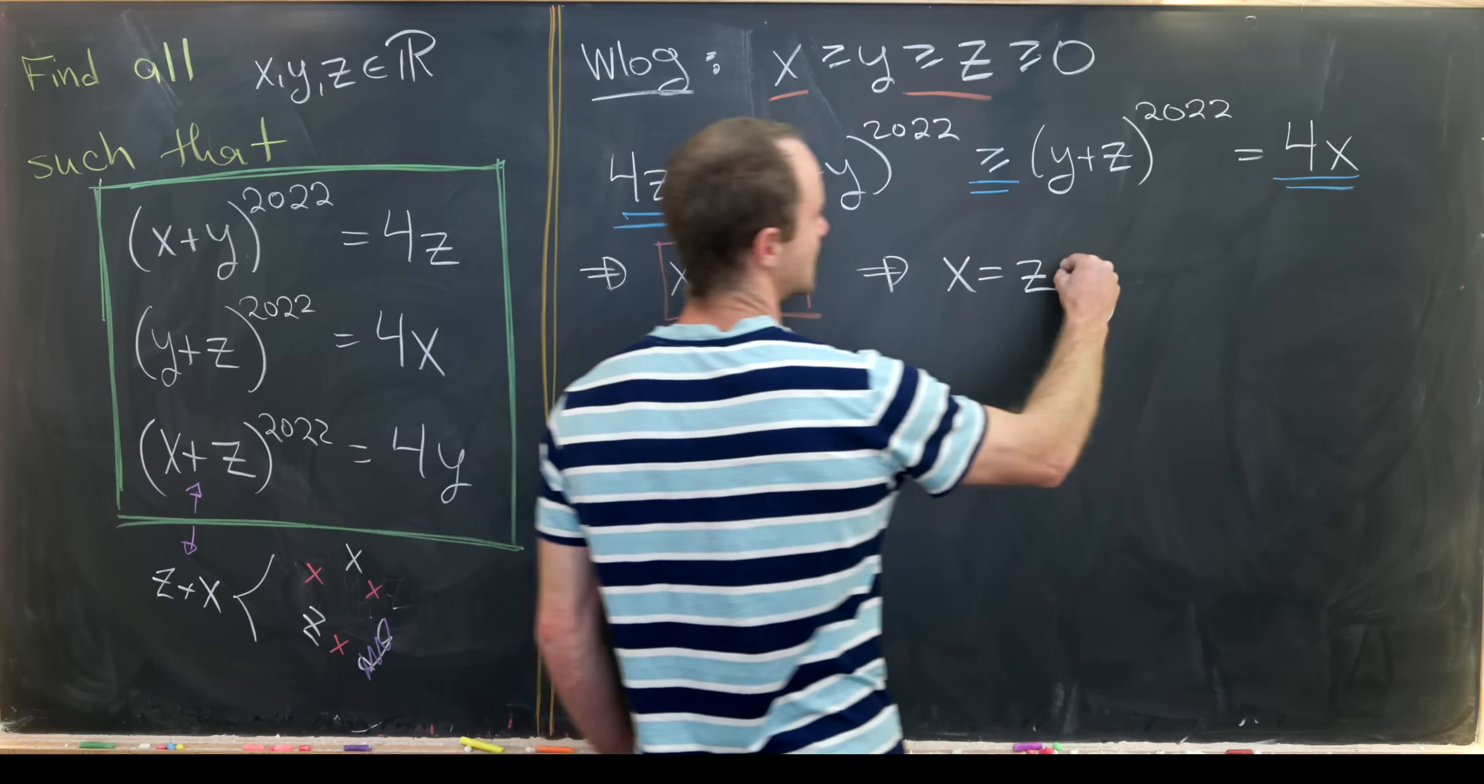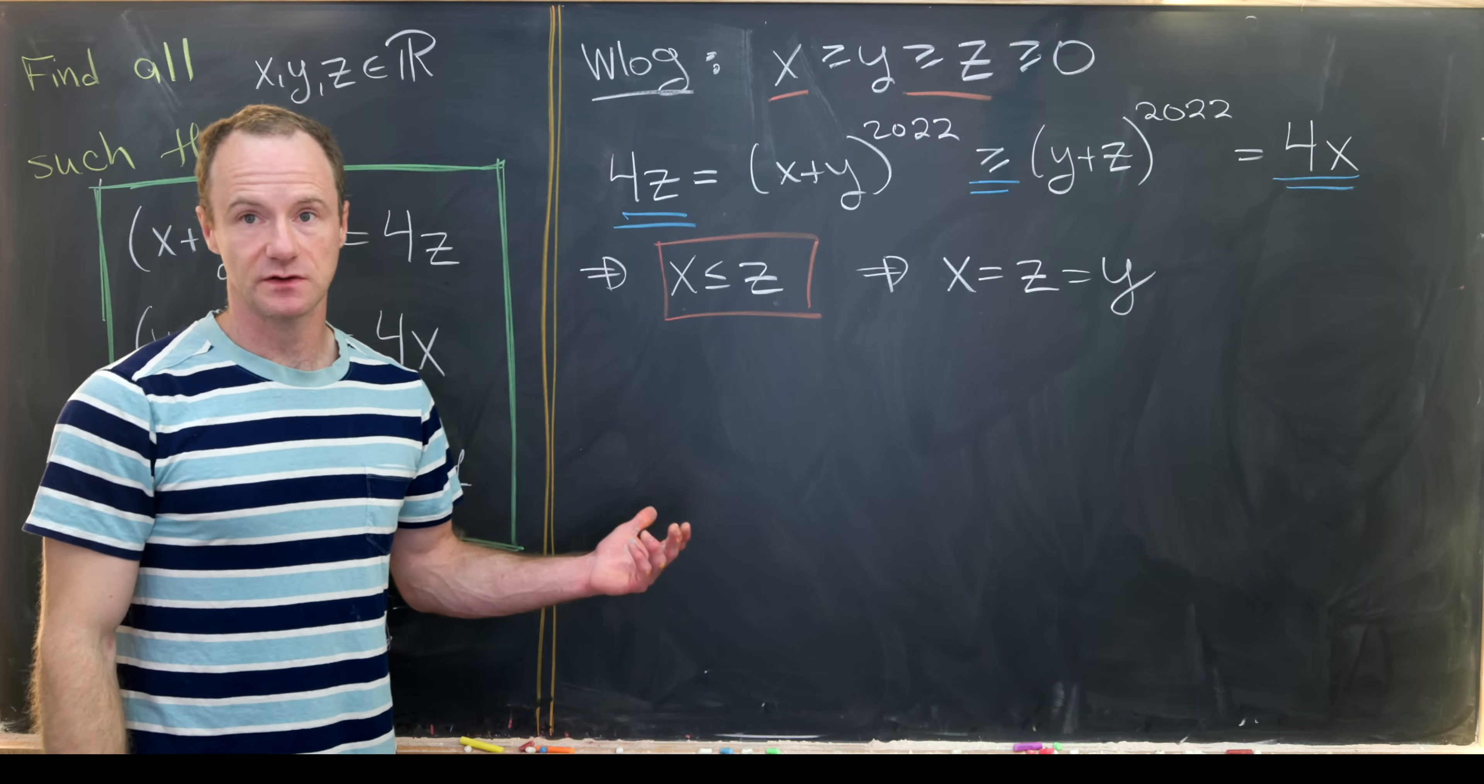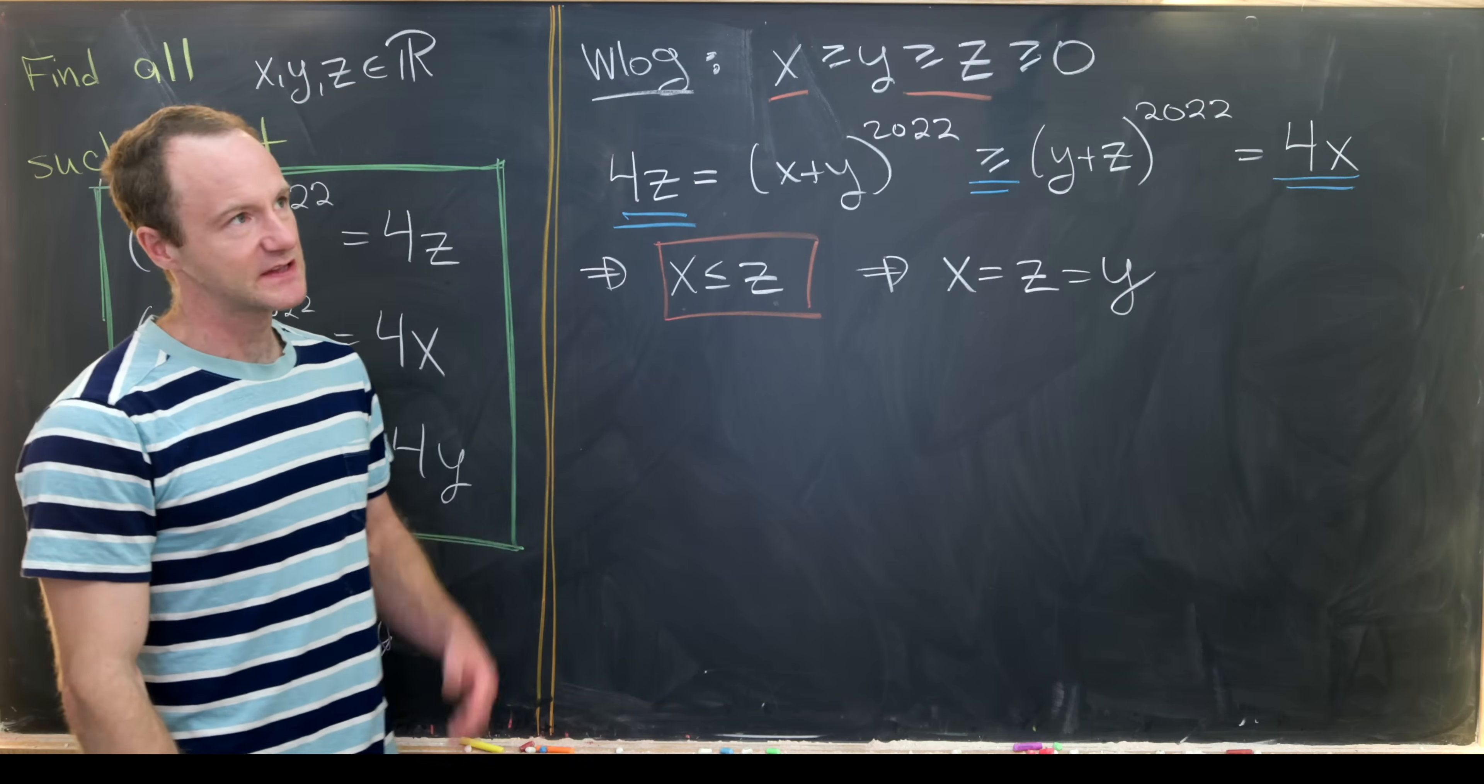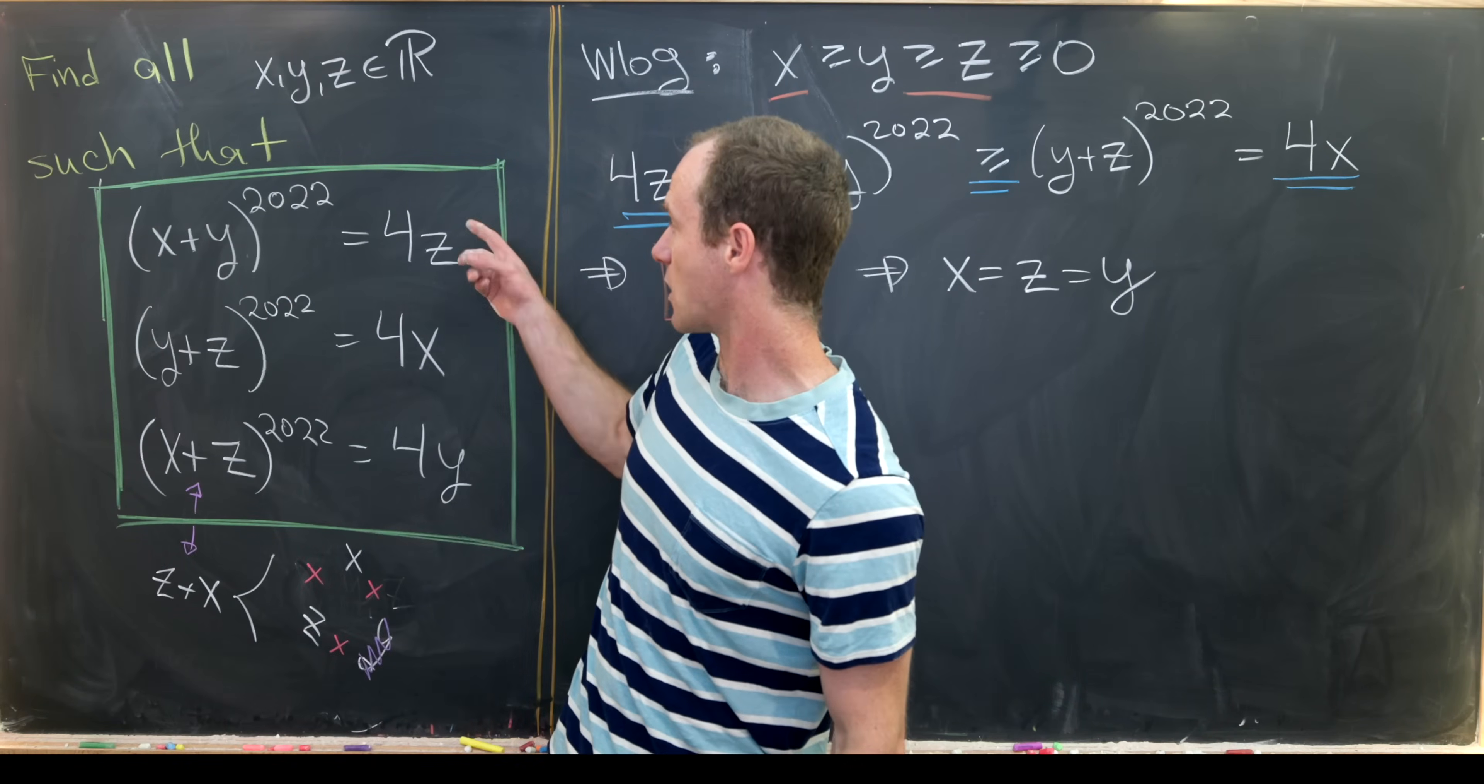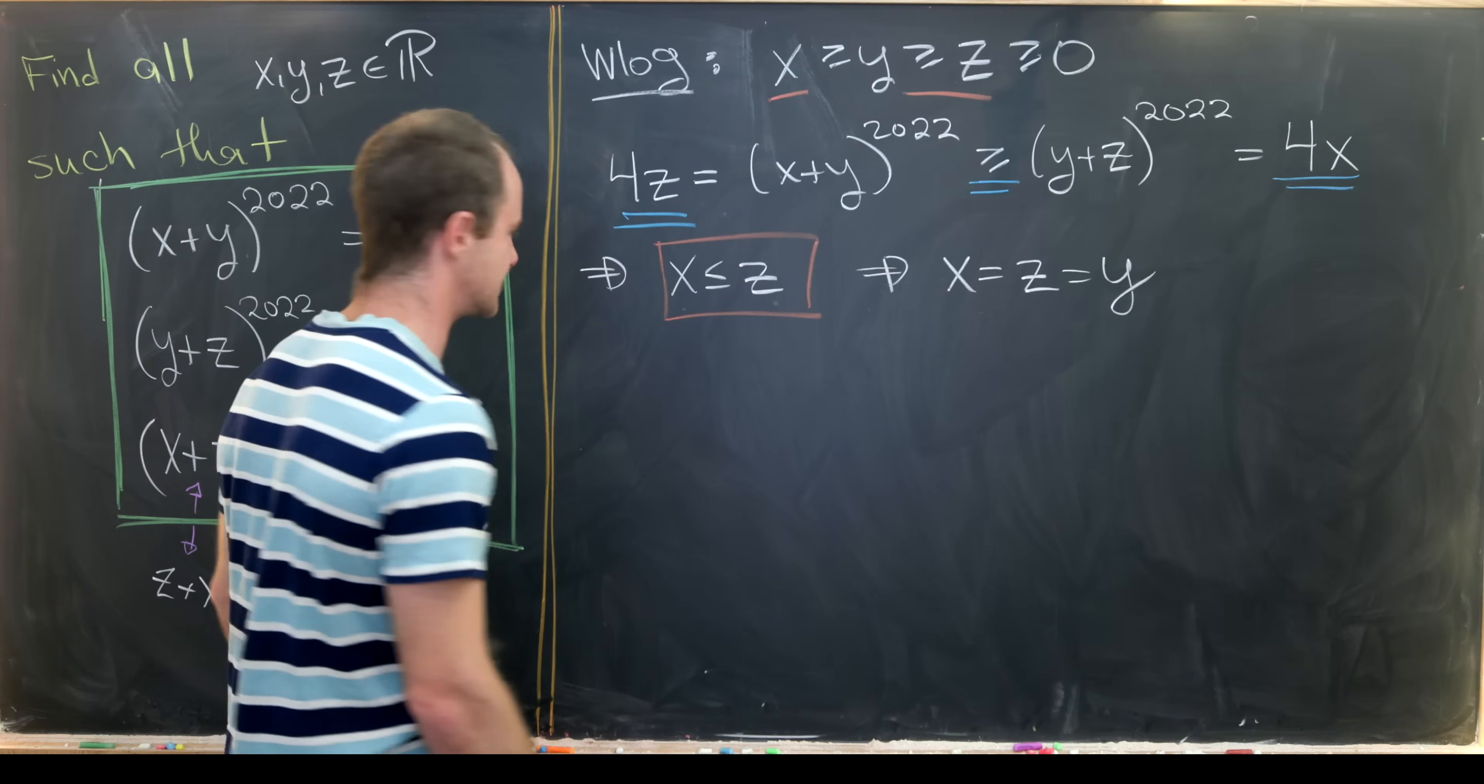But then since y is in the middle, it's also equal to y. So that means if we get a solution, it will be a solution where all of the variables are the same. But that's really good news, because that means that all of these collapse to the same equation, which should be pretty easy to solve.